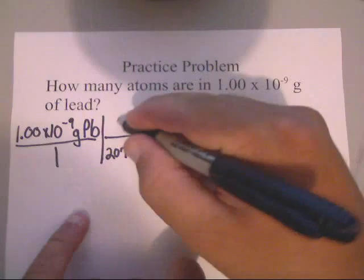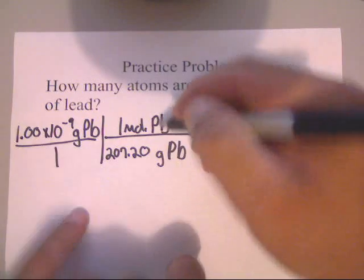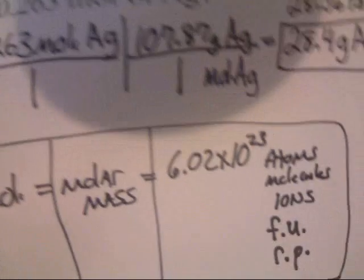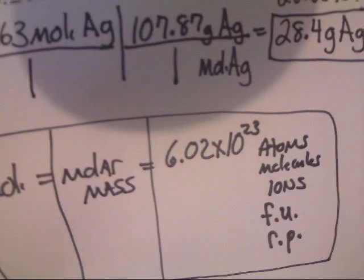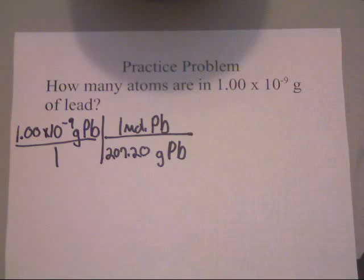Now, what I always do is I always write the 1 mole of Pb up here. Now, the reason I do that is you learned earlier that 1 mole of something can be the following. You learned that 1 mole of something could be equal to the molar mass or that 6.02 times 10 to the 23rd atoms, molecules, ions. We only use representative particles. Anything really, really small.